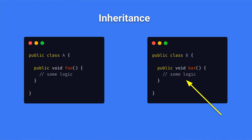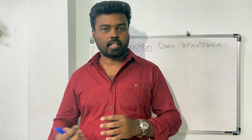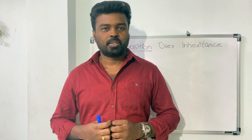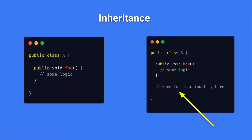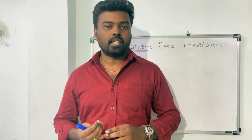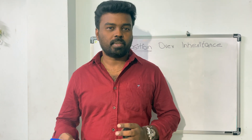Consider that class B now also needs the functionality of the function foo which is already implemented in class A. Now you can go ahead and rewrite the logic of function foo in class B, but that would be duplicating the code, and we want to avoid that. So instead of duplicating the code, we can actually extend class B from class A. By doing that, you automatically get the foo function in class B. So whenever a client creates an object for class B, they can invoke both the foo function and the bar function. This is how we achieve code reusability using inheritance.